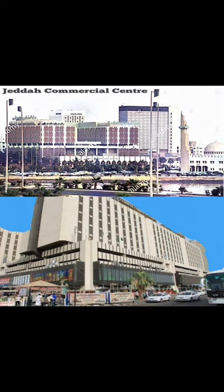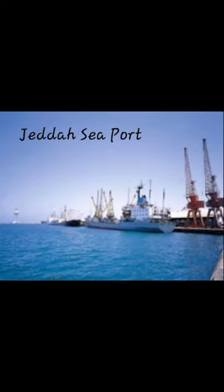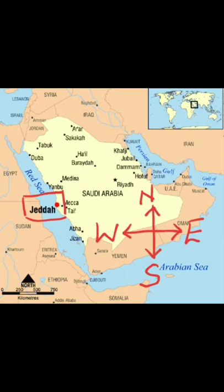Jeddah is a commercial city — a trading center — and a busy seaport. It is located on the west coast, on the coast of the Red Sea. Ships bring and take goods from here, making it an important hub for imports and exports. People from all over the world visit the place. Makkah and Medina are holy cities of Muslims, and Muslims from all over the world visit these cities.